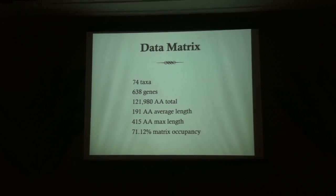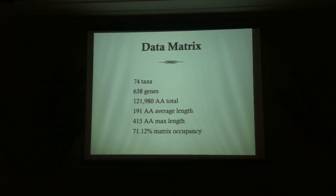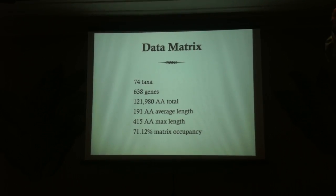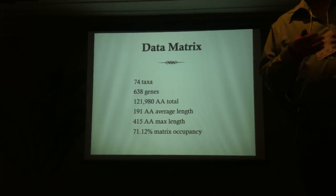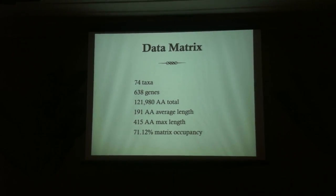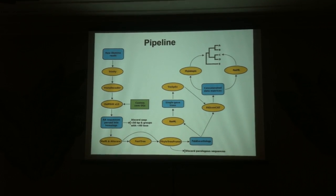To give you a feel for the data matrix: we ended up with 74 taxa, 638 genes, and about 122,000 amino acids. Regarding data matrix occupancy, when people first started doing phylogenomic analyses, a lot of datasets had maybe 30–40% data present and 50–70% missing. We've gotten a lot better — one talk today mentioned 95% occupancy, which is awesome. We're at about 70%, and we've played around with missing data and know we're in a pretty good range that won't affect results too much.